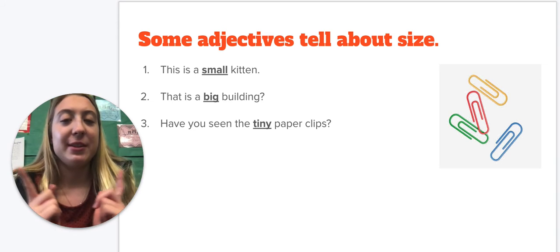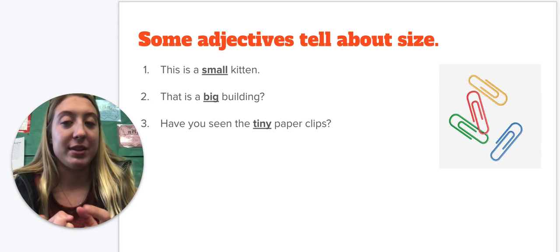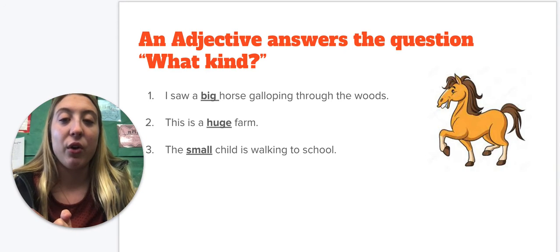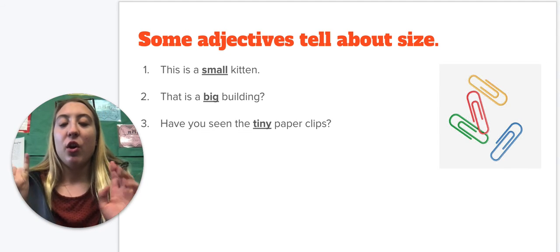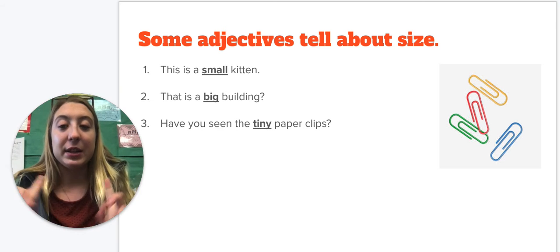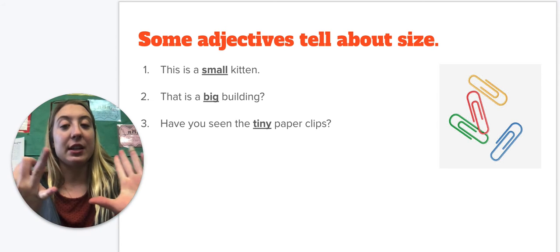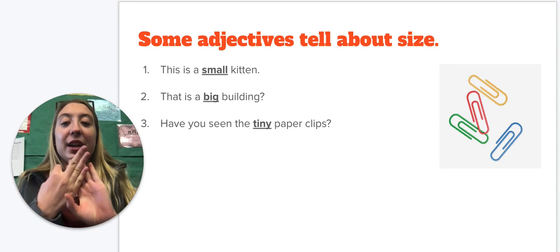But some adjectives also tell about size, which we went over with our what kind. But we're just going to go over. So we have what kind. When we ask that, it could be telling us about the color. It could be telling us about the shape. It could also be telling us about the size.